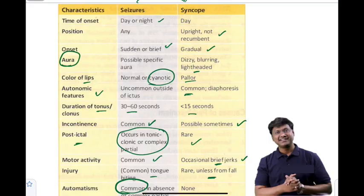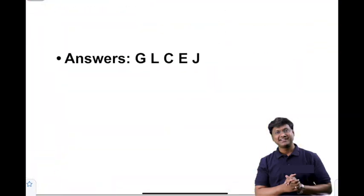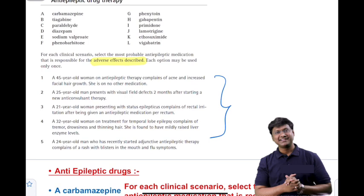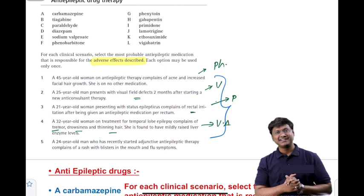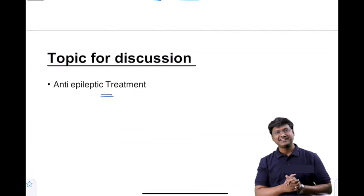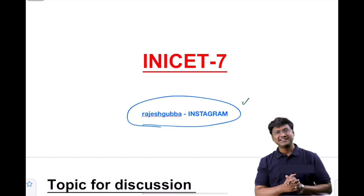In today's discussion we covered anti-epileptic therapy and adverse effects: acne and increased facial hair growth with phenytoin; visual defects with vigabatrin; rectal irritation with paraldehyde; tremors, drowsiness, and thinning of hair with valproic acid; and rash with blisters in the mouth and flu-like symptoms with lamotrigine. For more updates on general medicine, follow me on Instagram at Rajesh Gubba. Thank you very much — see you tomorrow.